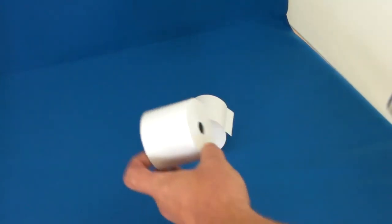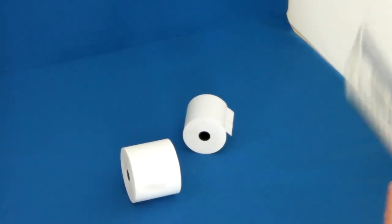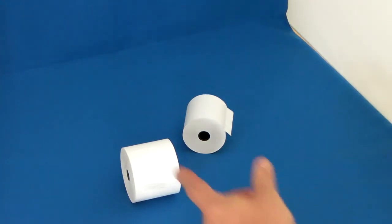However, if your till or credit card terminal just requires the roll to be dropped in, then the core size is unimportant.